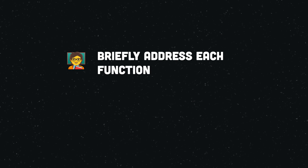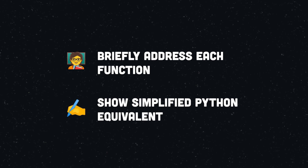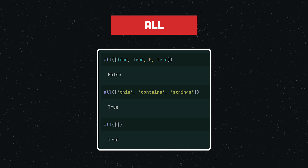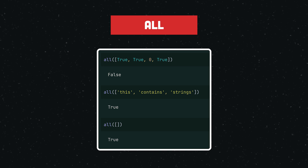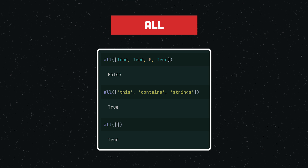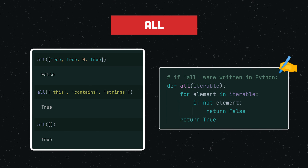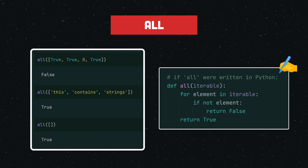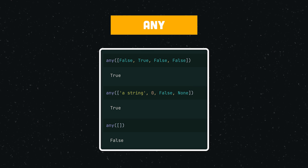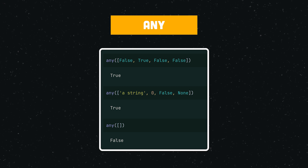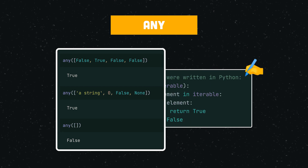I will briefly go over each function and when useful provide a simplified Python equivalent to help you understand what it does and how it works. `all()` takes an iterable as argument and returns true if all elements of the iterable evaluate to true. If the iterable is empty, true is returned as well. `any()` takes an iterable as argument and returns true if any element of the iterable evaluates to true. Contrary to `all()`, false is returned if the iterable is empty.